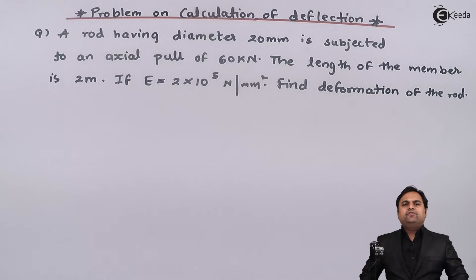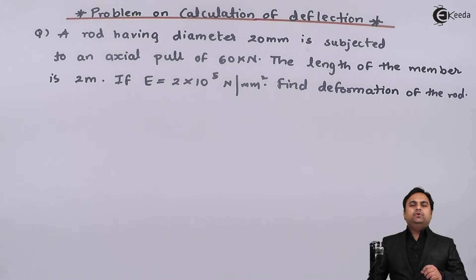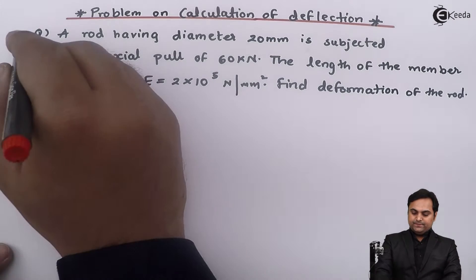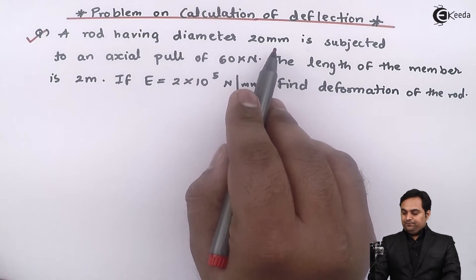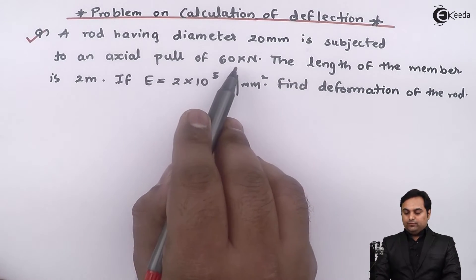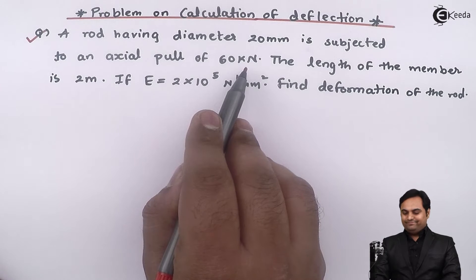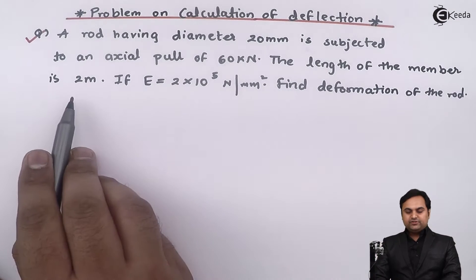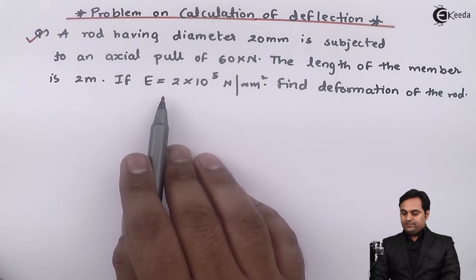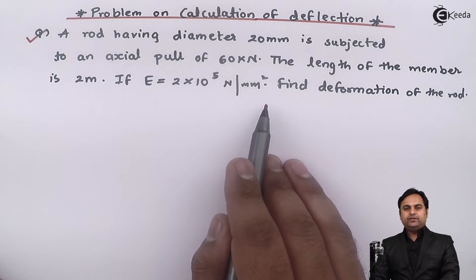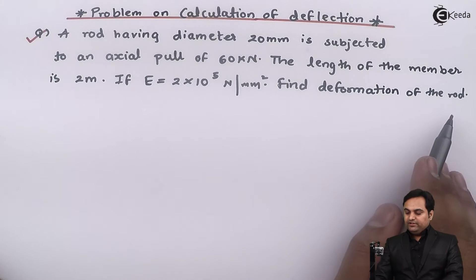Hello friends, here in this video we will see a problem in which we are going to calculate the deflection for a given member. Here I have a question: a rod having diameter 20 mm is subjected to an axial pull of 60 kilonewton. The length of the member is 2 meters. If capital E, that is Young's modulus, is 2 into 10 raised to 5 Newton per mm square, find the deformation of the rod.